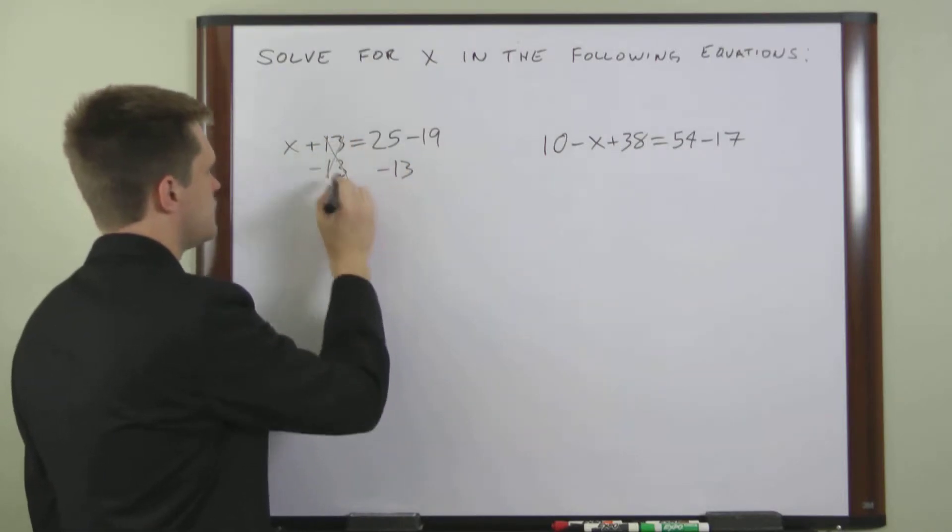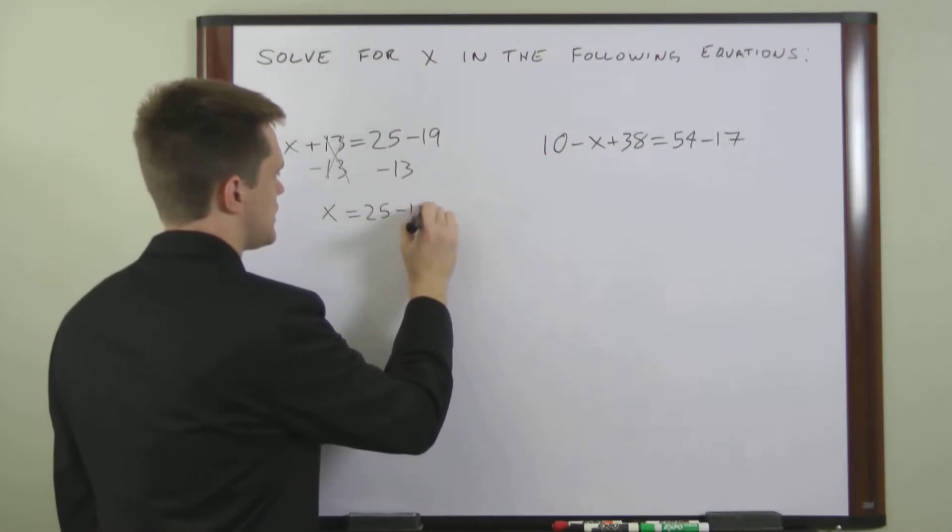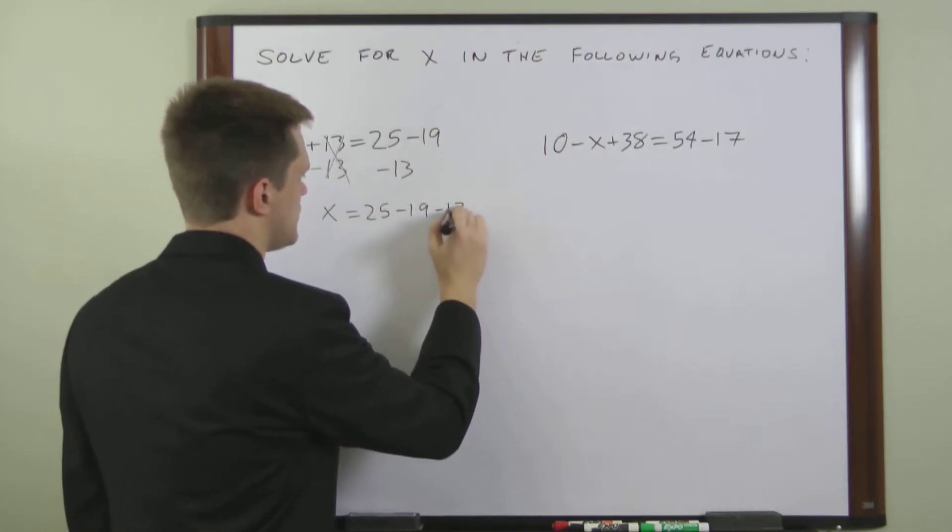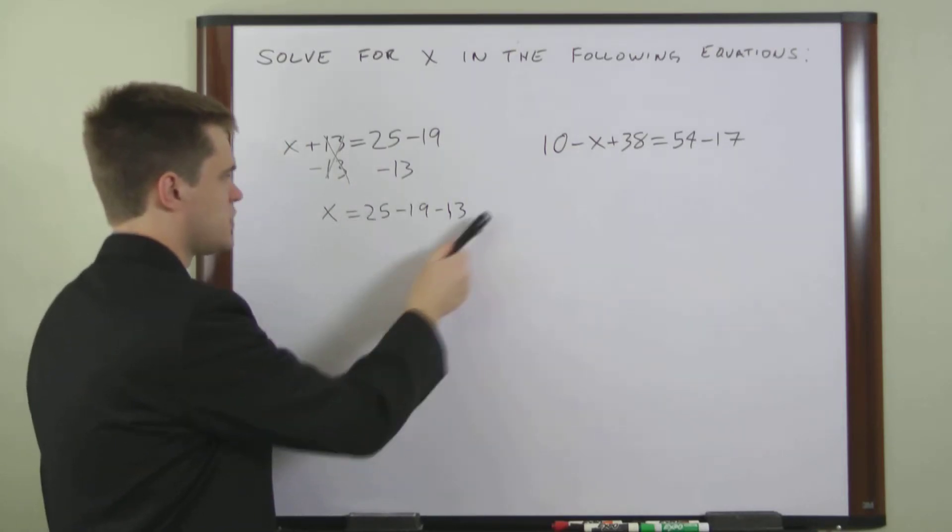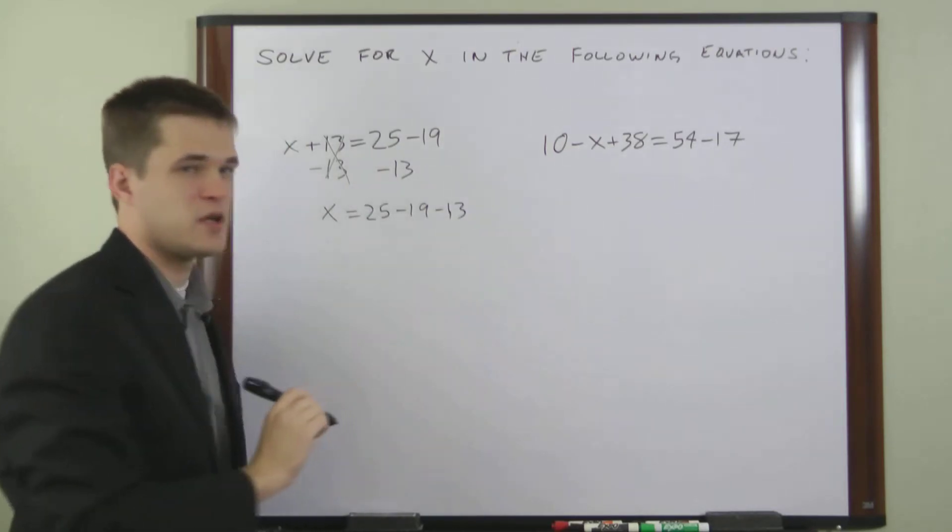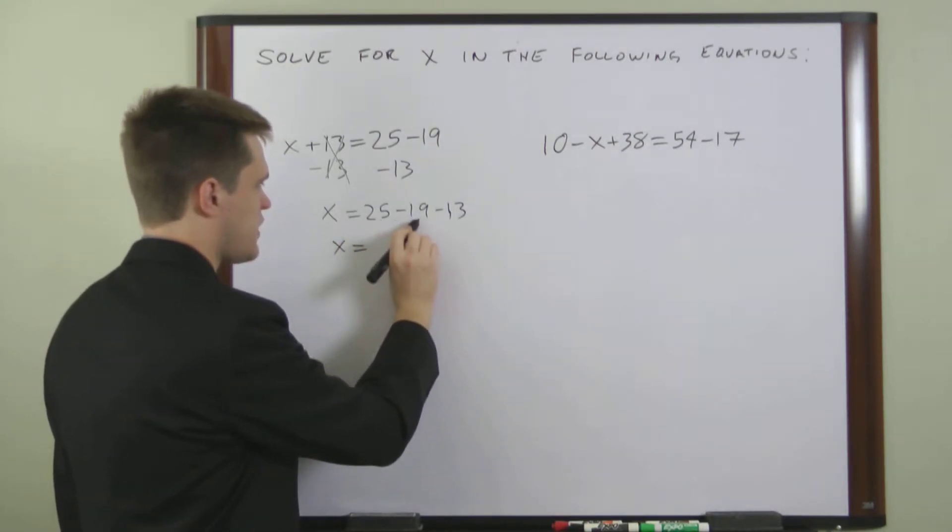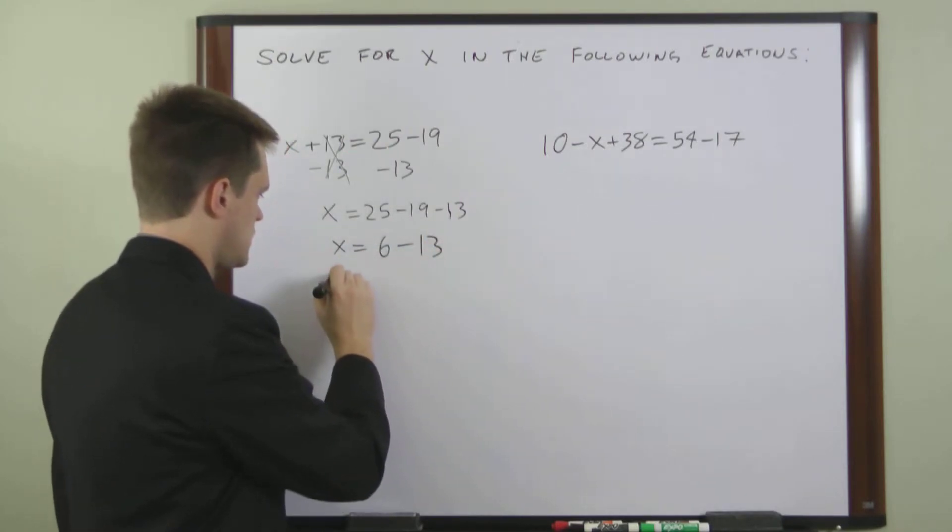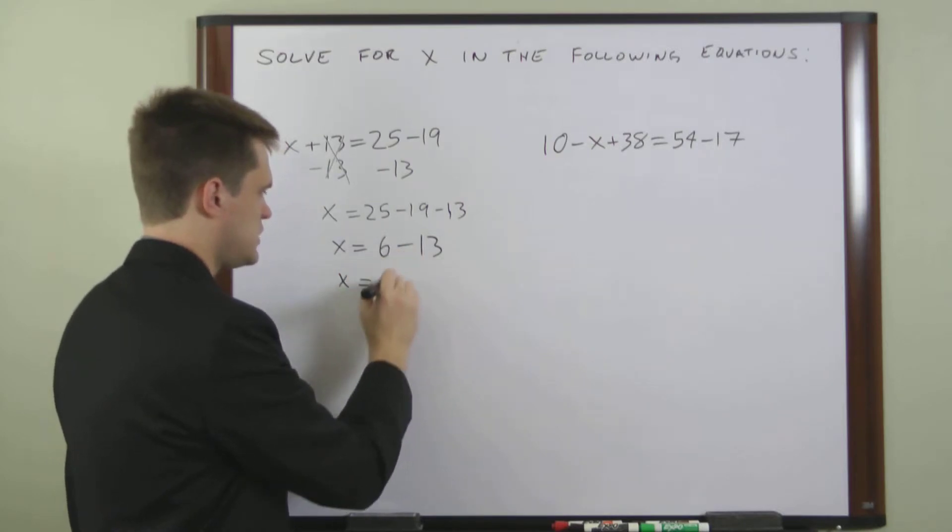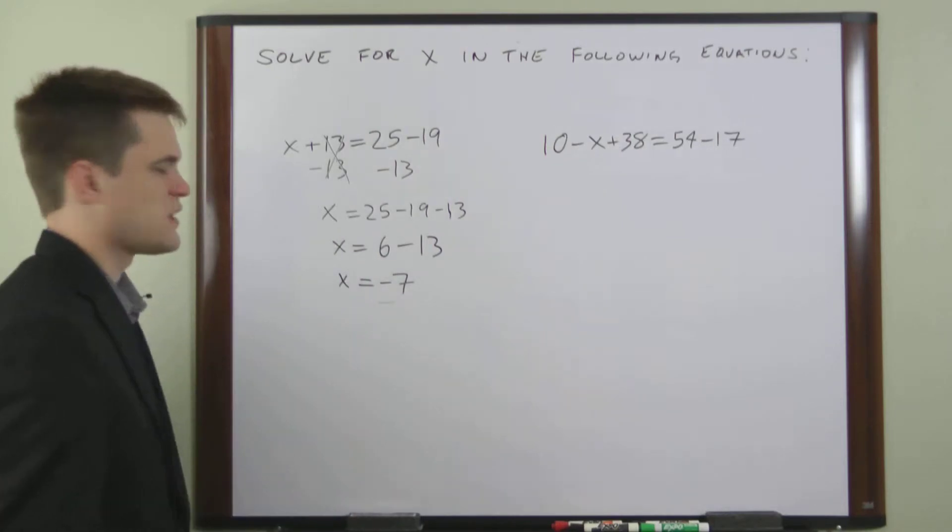So this will cancel, and what we're left with is x equals 25 minus 19 minus 13. And so now all we have to do is solve this part over here and we've got the value of x. So let's do these one at a time. x equals 25 minus 19 is 6. So x equals 6 minus 13. And 6 minus 13 equals negative 7. So in this equation, x equals negative 7.